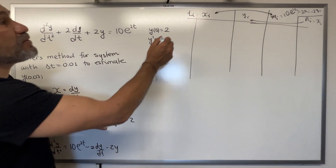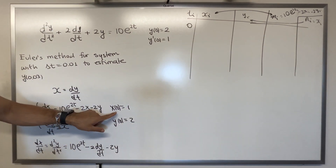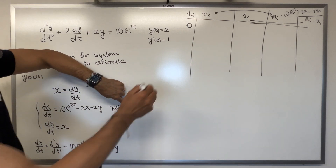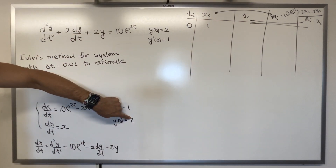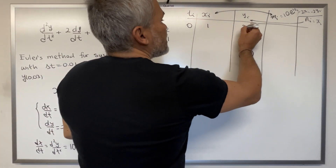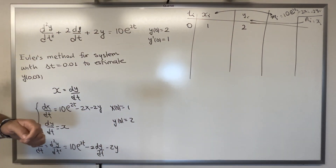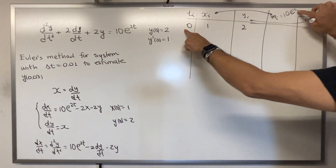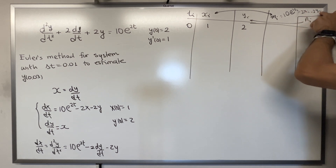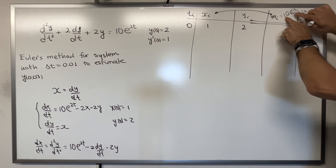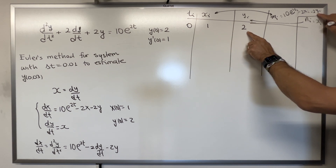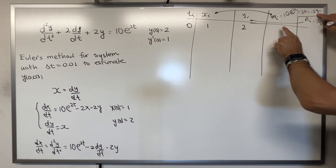We start the process. When t = 0: t₀ = 0, x₀ = 1, y₀ = 2. Then m₀ is computed by substituting these values: 10 times e^0 = 10, minus 2(1) = 8, minus 2(2) = 4. So m₀ = 4. And n₀ = x₀ = 1.